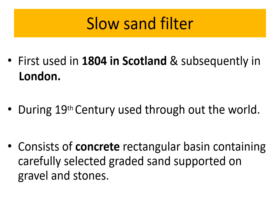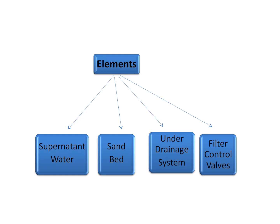The slow sand filter basically consists of a concrete rectangular basin containing selected graded sand, which are carefully chosen, supported on gravel and stones. Gravel is nothing but a smaller size of stones — they look like pebble stones. The elements of a slow sand filtration method are: supernatant water, a sand bed, an under-drainage system, and filter control valves.